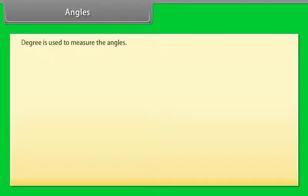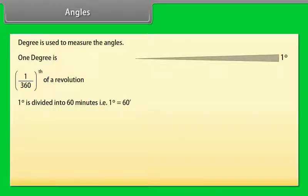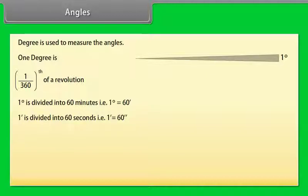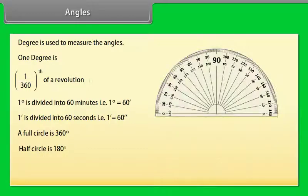How to measure the degree? Degree is used to measure angles. 1 degree is 1/360th of a revolution. 1 degree is divided into 60 minutes, that is 1° = 60'. 1 minute is divided into 60 seconds, that is 1' = 60". There are 360 degrees in one full rotation. A full circle is 360°, and a half circle is 180°.